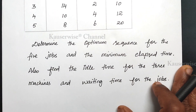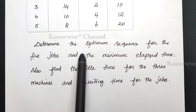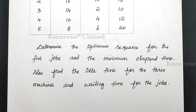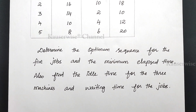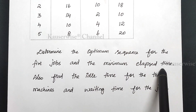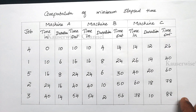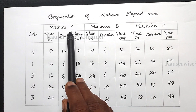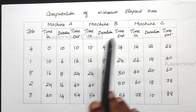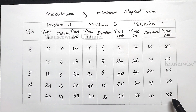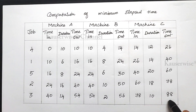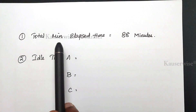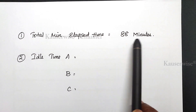We have found the optimum sequence for the 5 jobs and the in-time and out-time for 3 machines. The entire process comes to an end in the 88th minute. This is the total minimum elapsed time — 88 minutes.